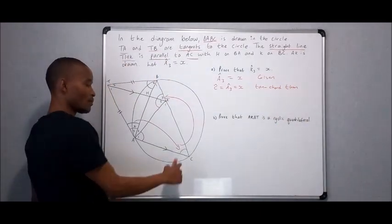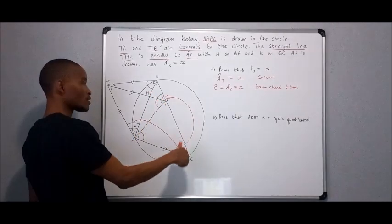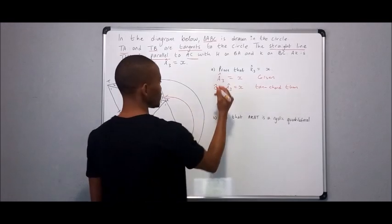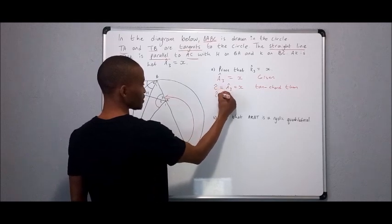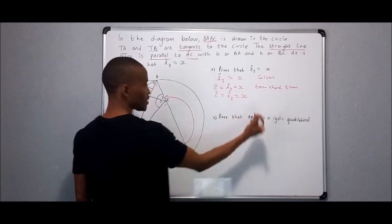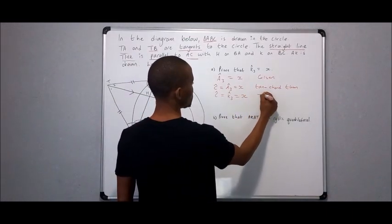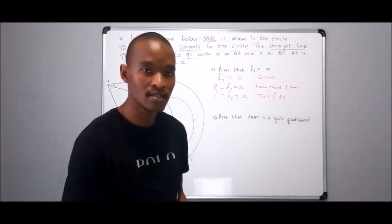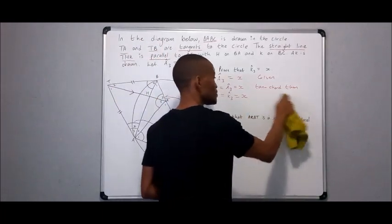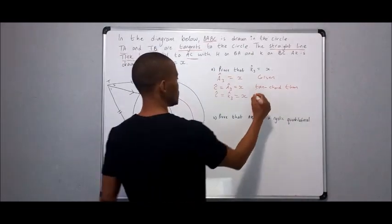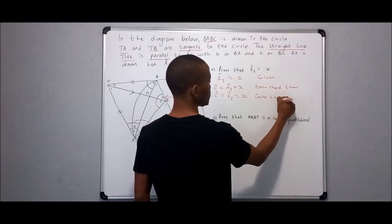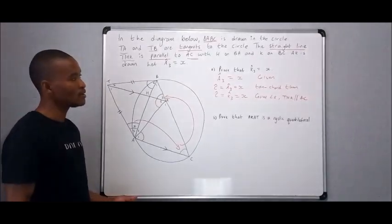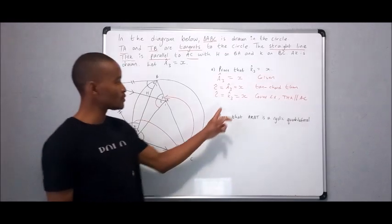But C is equal to angle K3 by what? Corresponding angles, since there are two parallel lines here, THK and AC. So we have the fact that angle C is equal to angle K3, it will make it equal to x as well because THK is parallel to AC. However, we need to first indicate the type of angles that are formed, of which we are using. So we are using, because they are corresponding angles and THK is parallel to AC. And that is it, enough proof to prove what we are required to. K3 is equal to x, good.